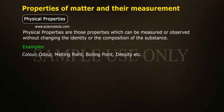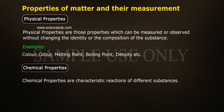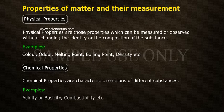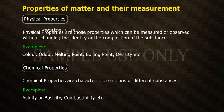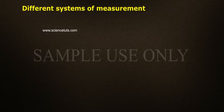Chemical properties are characteristic reactions of different substances. Examples include acidity or basicity, combustibility, etc.